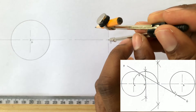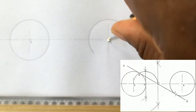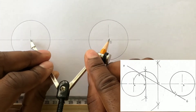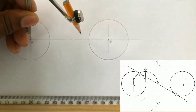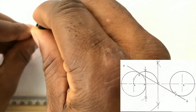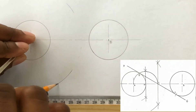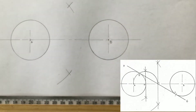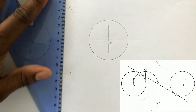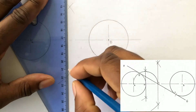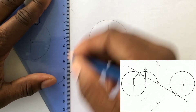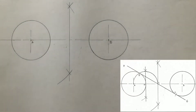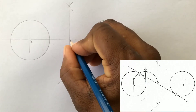We will now draw a circle from point B. This line intersected line AB at point C — label point C.